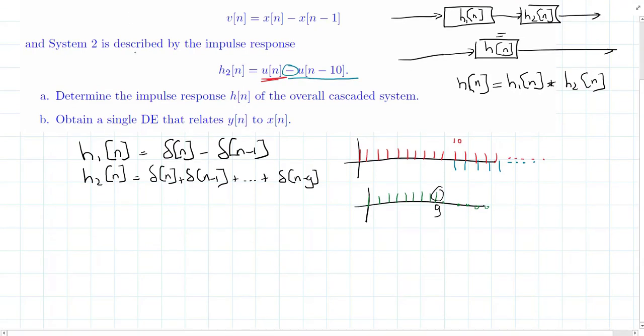So now let's start off with calculating the overall impulse response of the total system. So, as we said before, it was the convolution sum between the impulse response of the first system and the impulse response of the second system, which we can calculate as the summation of k is equal to zero, up to one,